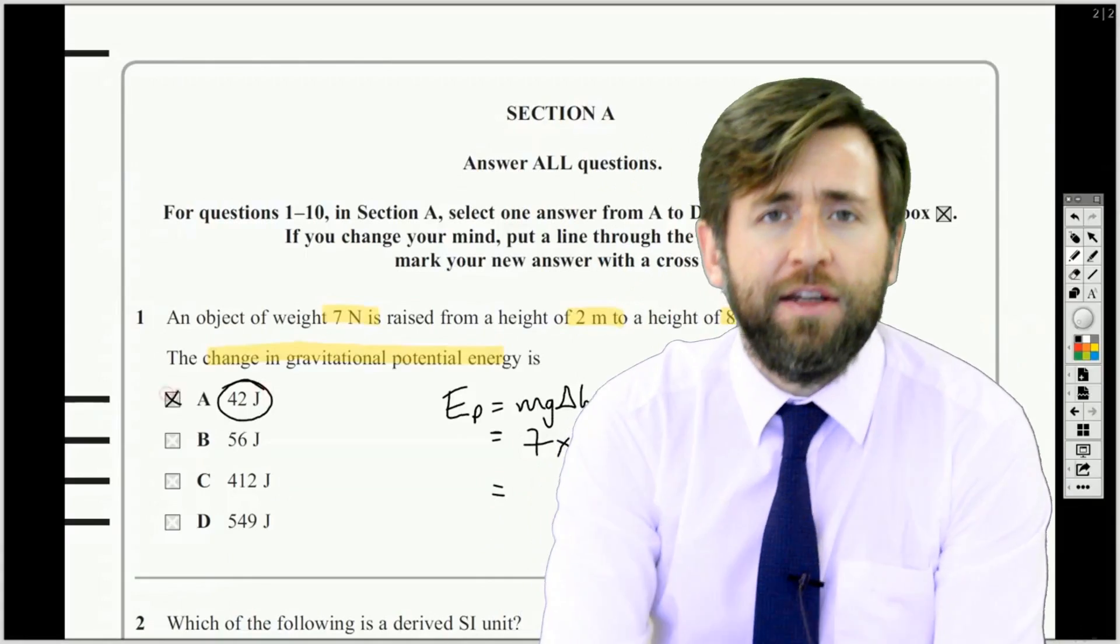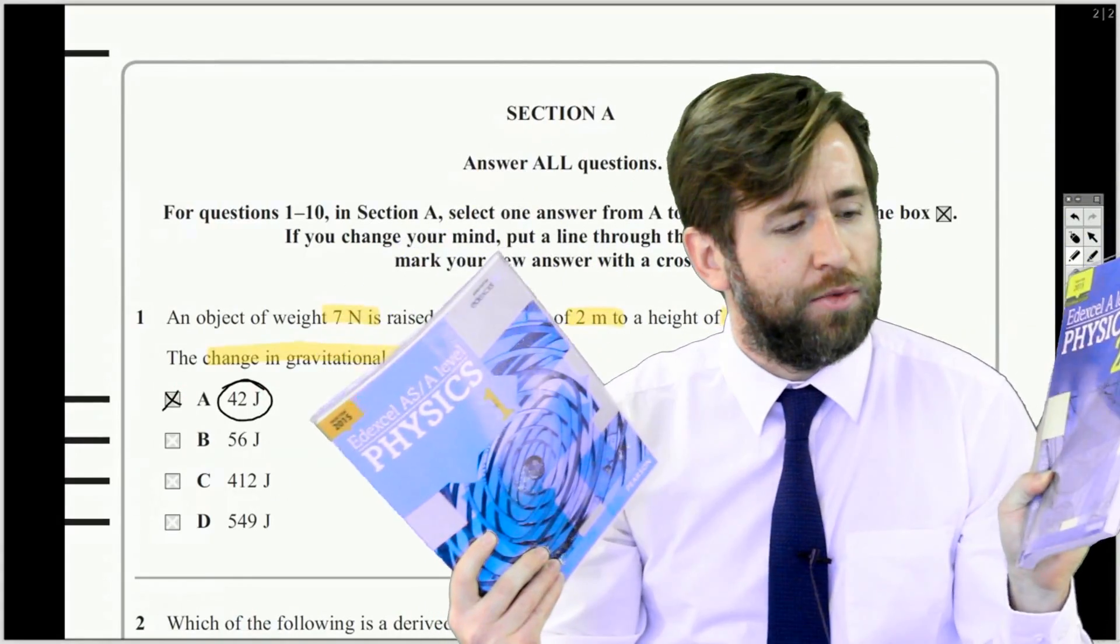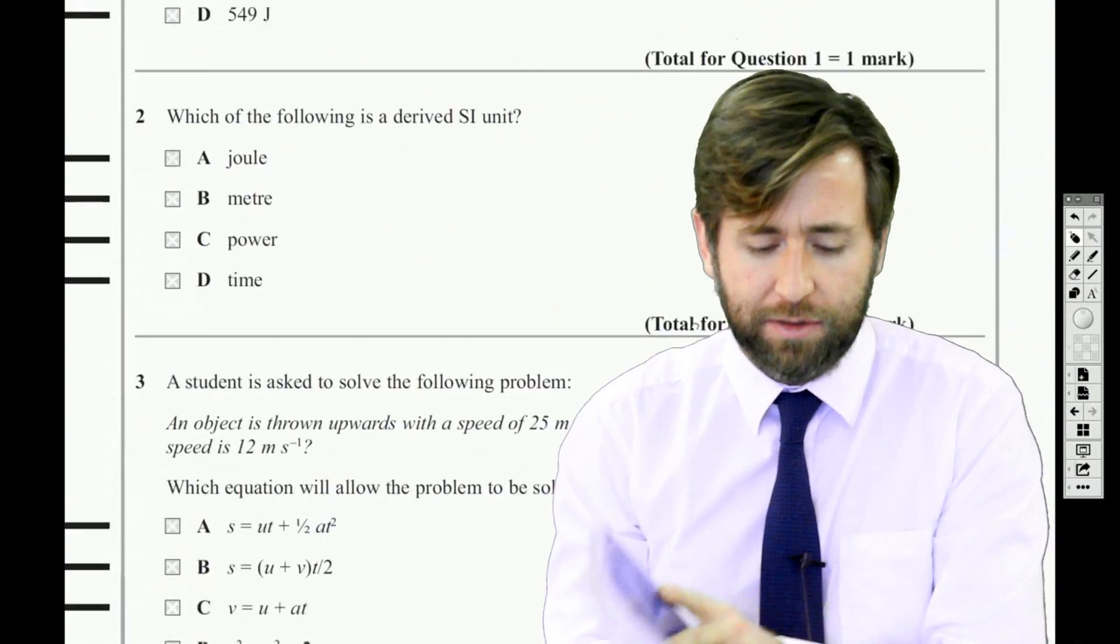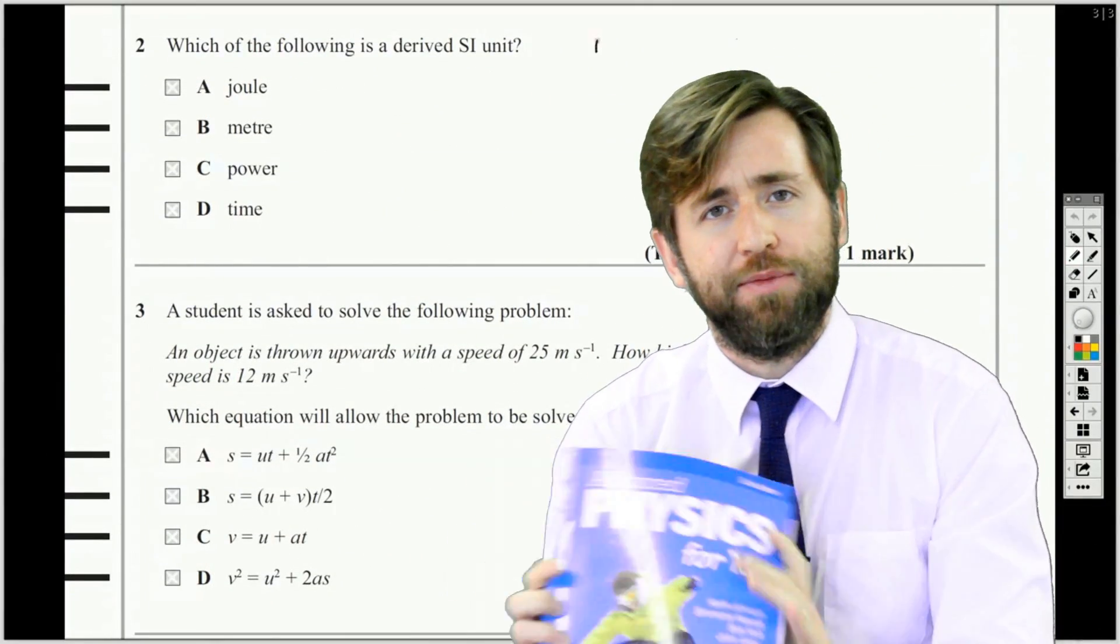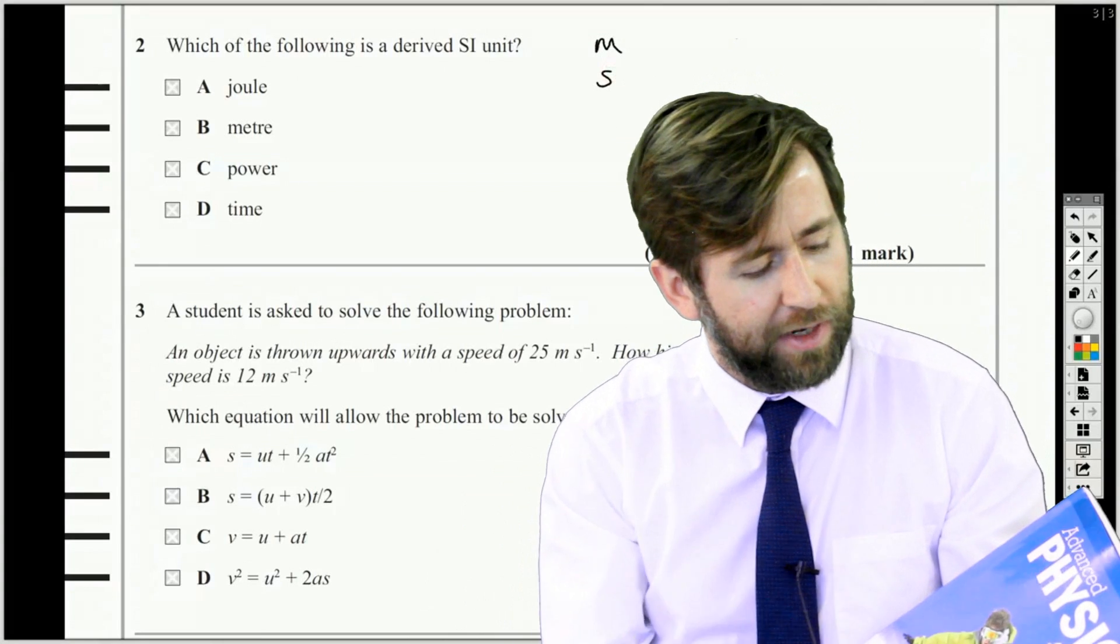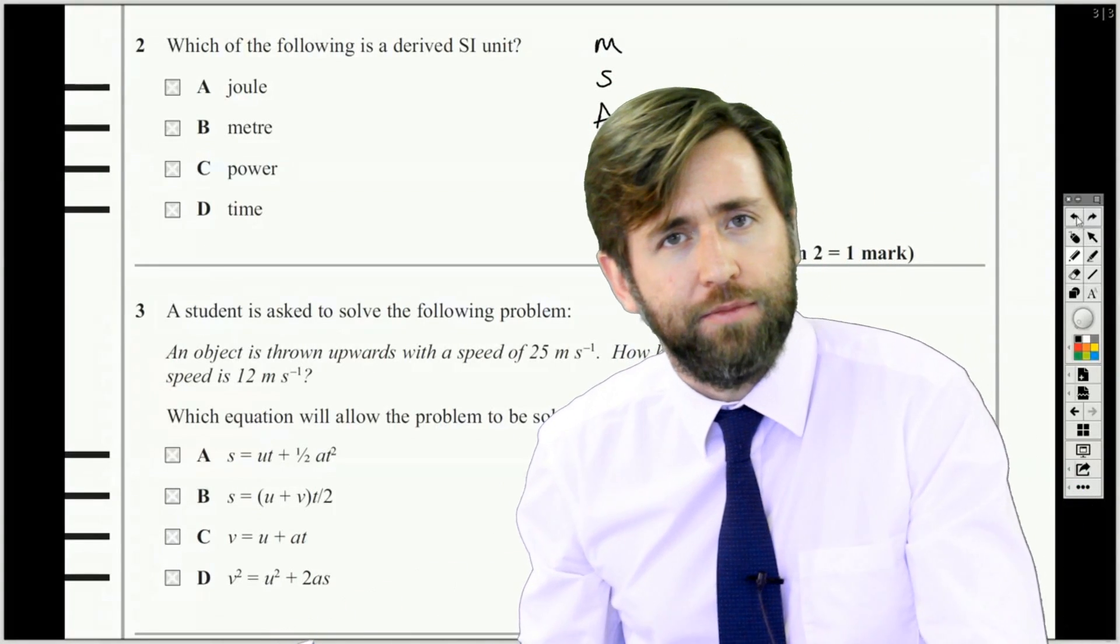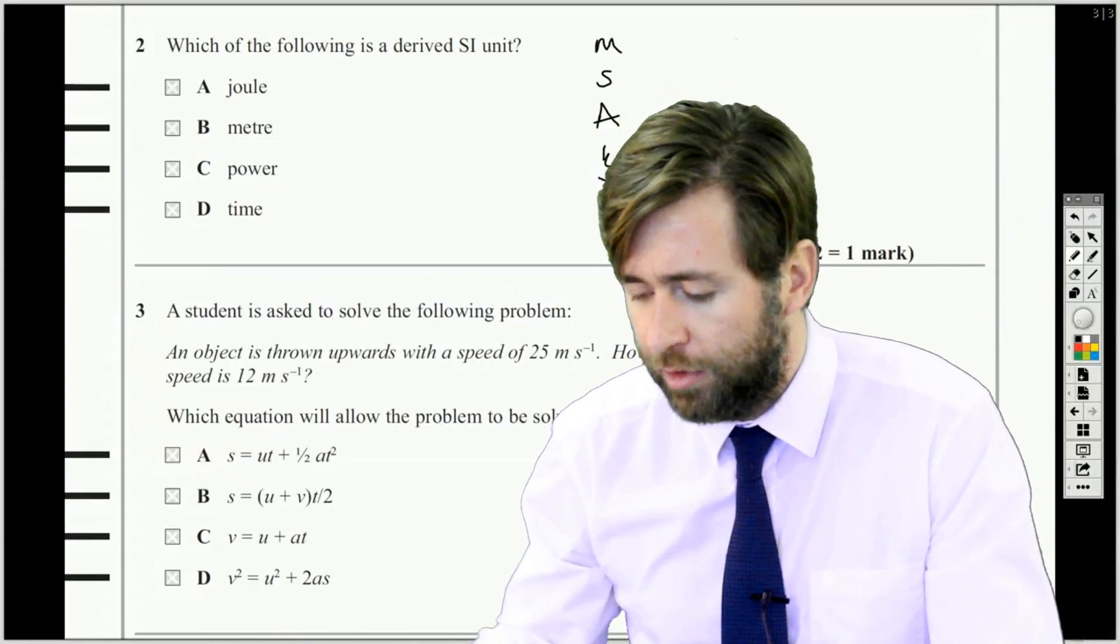Then they get the next two textbooks on the same exam board but different publisher and they finish those. And then maybe they've got themselves a third textbook, or maybe it's a textbook that helps them bridge the gap between their A-levels and the higher education course that they want to do.